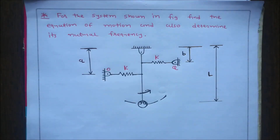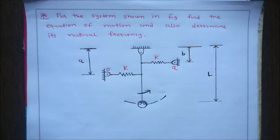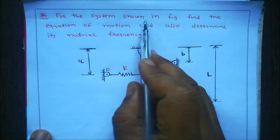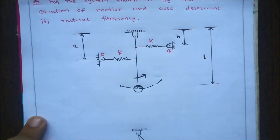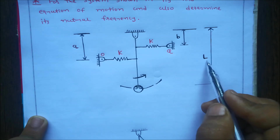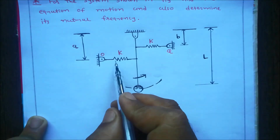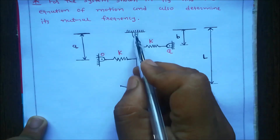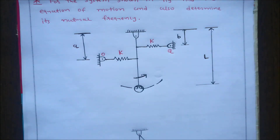Today we discuss a numerical related to equation of motion and natural frequency from the free vibration chapter. In our question, data is given for the system shown in the figure: find the equation of motion and determine its natural frequency. One pendulum is given with mass m and length l, and there are two springs both with stiffness k. From the support, the first spring is at distance a and the second spring at distance b. The pendulum rotates in the anti-clockwise direction.